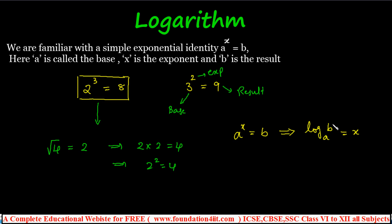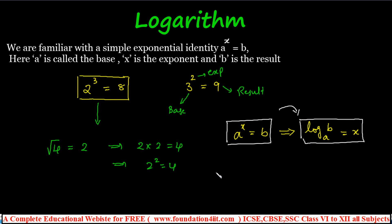We read this as: log b to the base a is equal to x, which corresponds to a to the power x equals b. Here a is the base, x is the exponent, and b is the result. For example, 2 to the power 3 equals 8 in exponential form can be written in logarithmic form as log 8 to the base 2 is equal to 3. The base stays the same; the power becomes the result.